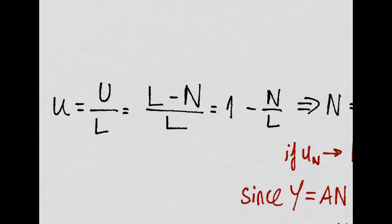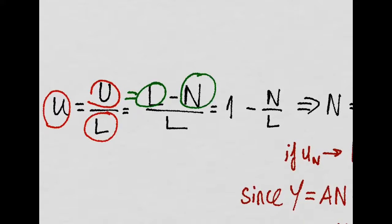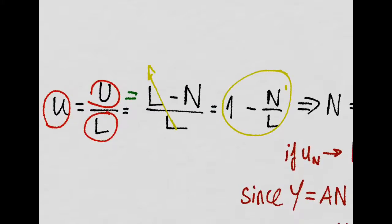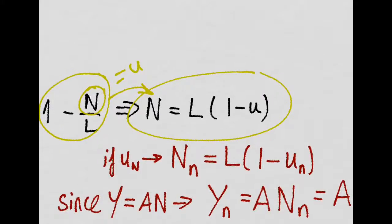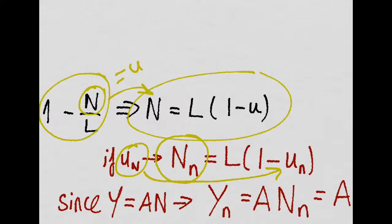Also, since we can define the unemployment rate as those who are employed over the labor force, we know that the unemployed are just the labor force minus those who are employed. So, the unemployment rate is just this. Because this is 1 and this is this. Then, we just have to solve for n and we get this expression. So, if we are at our natural rate of unemployment, then we will just have to substitute right here to get our natural employment level.